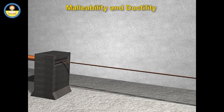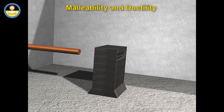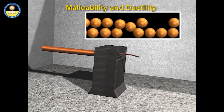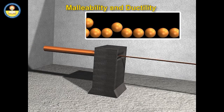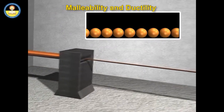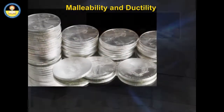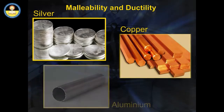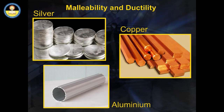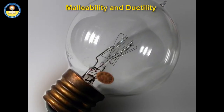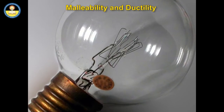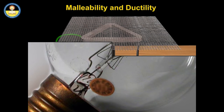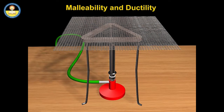The ductility property follows from the malleability property. While being drawn into wires, metals are stretched. Because of strong metallic bonds, the metal atoms do not separate easily. Silver, copper, and aluminium are very ductile. Very thin wires can be made out of these elements. Electric bulbs have filament made of tungsten. Iron wires are used in preparing wire gauzes.